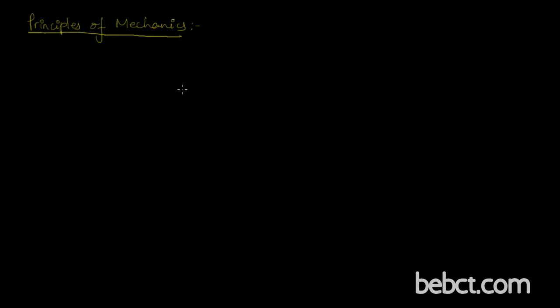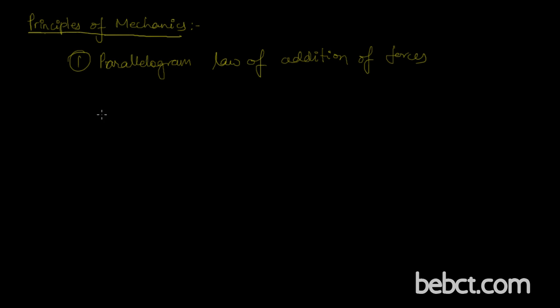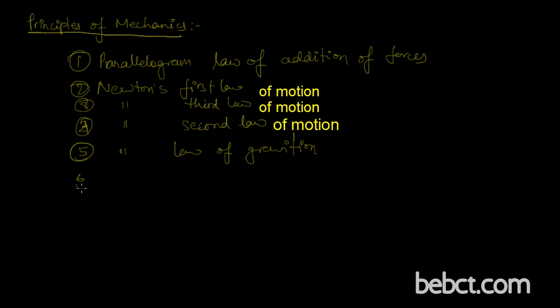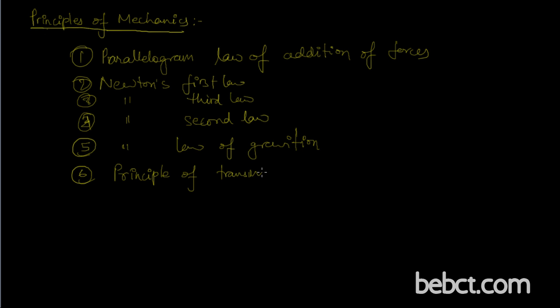We have a few laws and principles used to find relations between bodies and the effect of force. The first is the parallelogram law of addition of forces, which is simply the parallelogram law of vector addition. The next is Newton's first law, then Newton's second law, and Newton's third law. The fifth is Newton's law of gravitation. And the sixth is the principle of transmissibility — I'm going to explain this one because you may not know it.